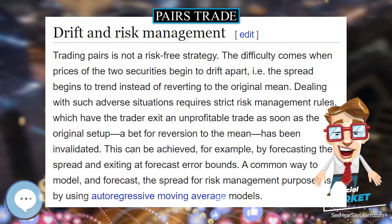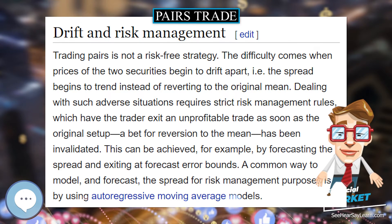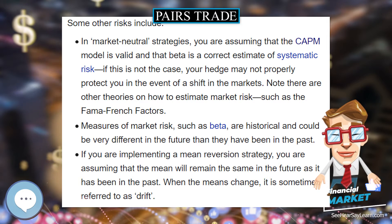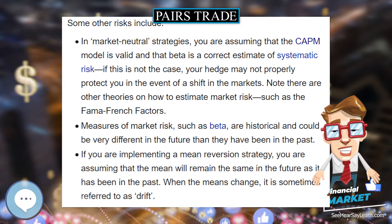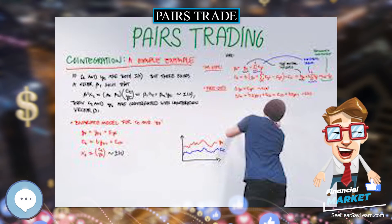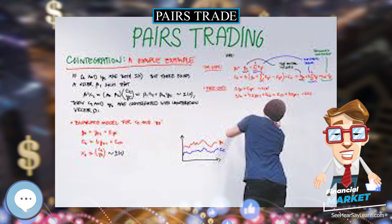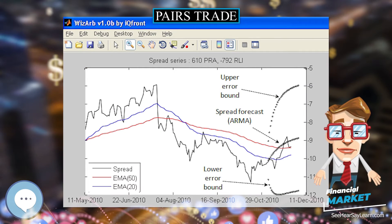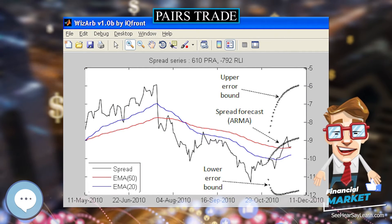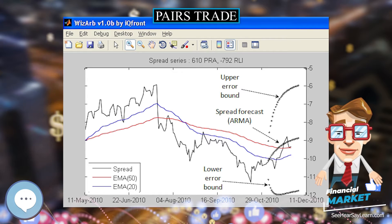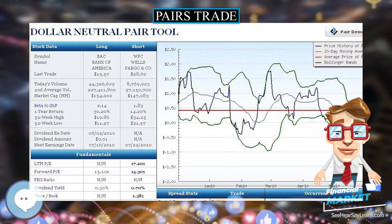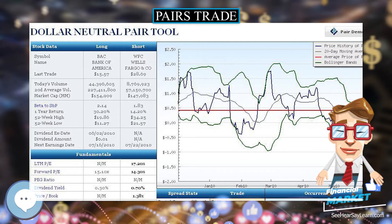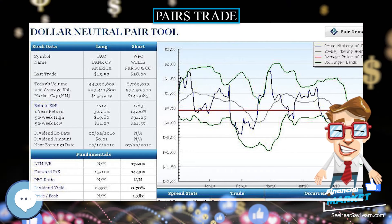Regardless of how the portfolio is constructed, if the spread series is a stationary process, then it can be modeled and subsequently forecast using techniques of time series analysis. Among those suitable for pairs trading are Ornstein-Uhlenbeck models, auto-regressive moving average (ARMA) models, and vector error correction models.